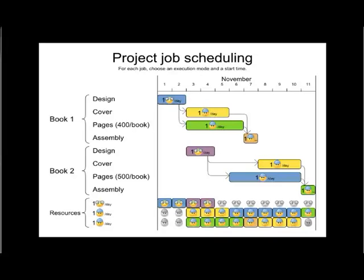Here's an example where we're going to produce two books — Book One and Book Two — 10,000 copies each. To produce Book One, we first need to design the layout, cover, and so forth. This will take our designer two days, so on the first and second of November we'll design the book.